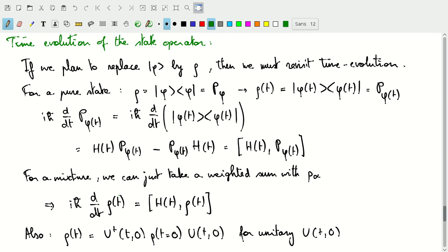For a mixture, again, because of the fact that rho is linearly related to the projection operators through the probabilities for a mixture, we can again just take a weighted sum and write the exact same expression where i times h-bar and the total time derivative of the state operator will be equal to the commutator of the Hamiltonian with the state operator.